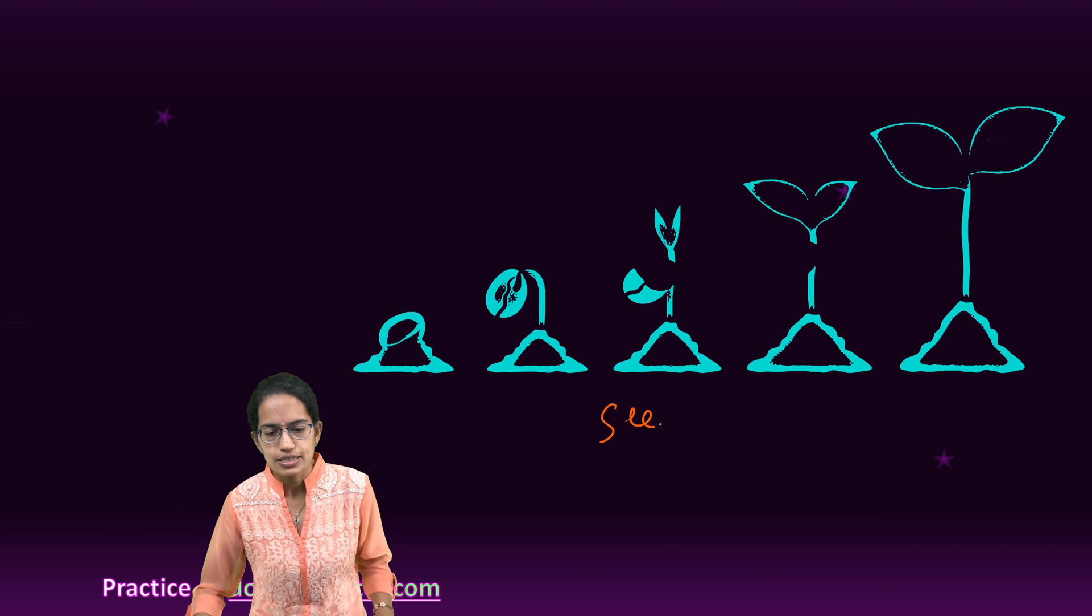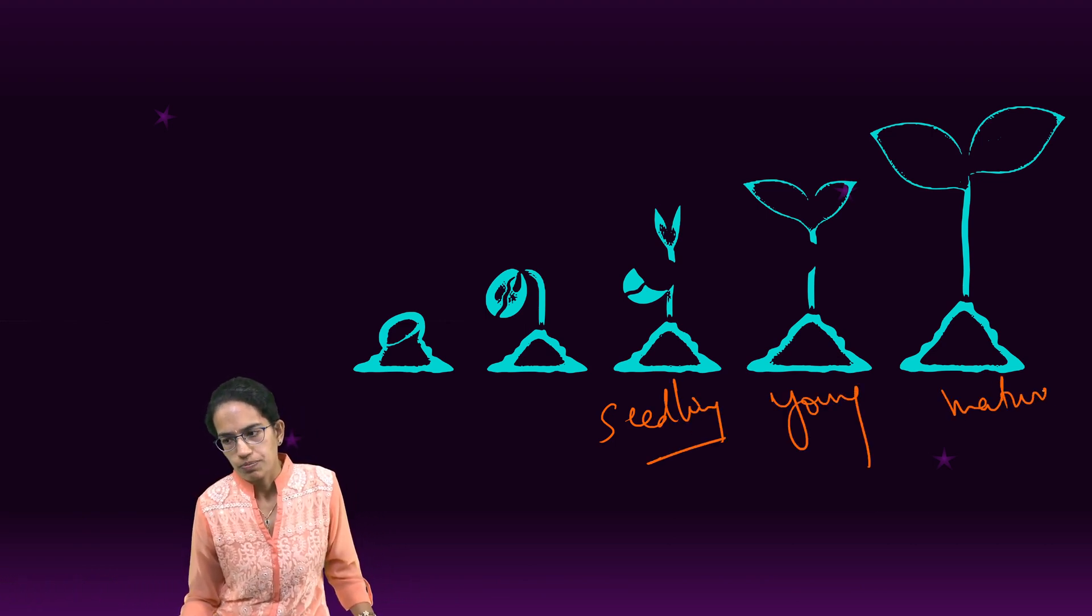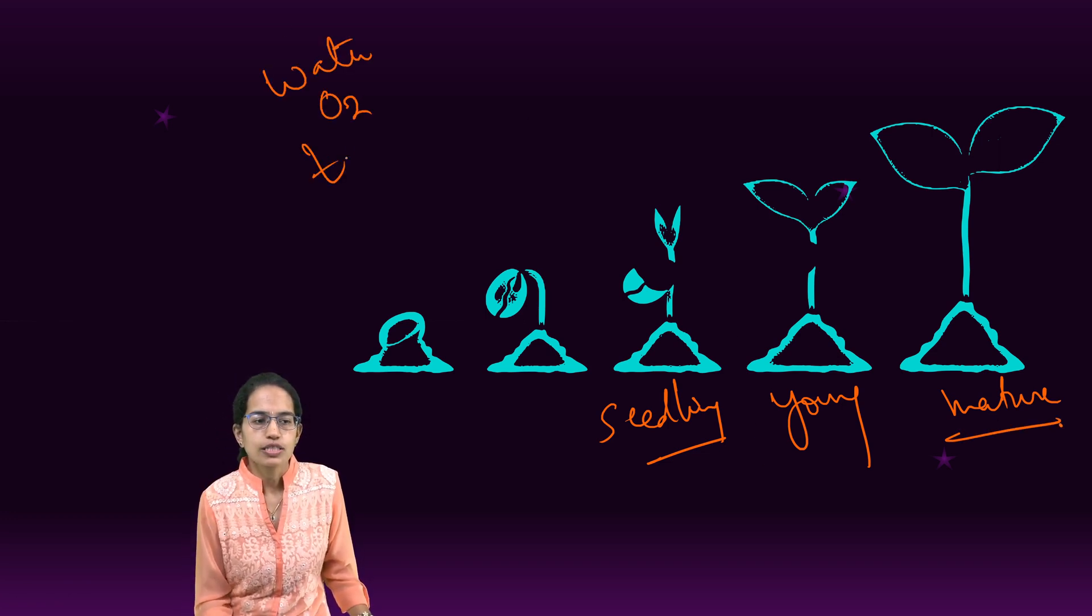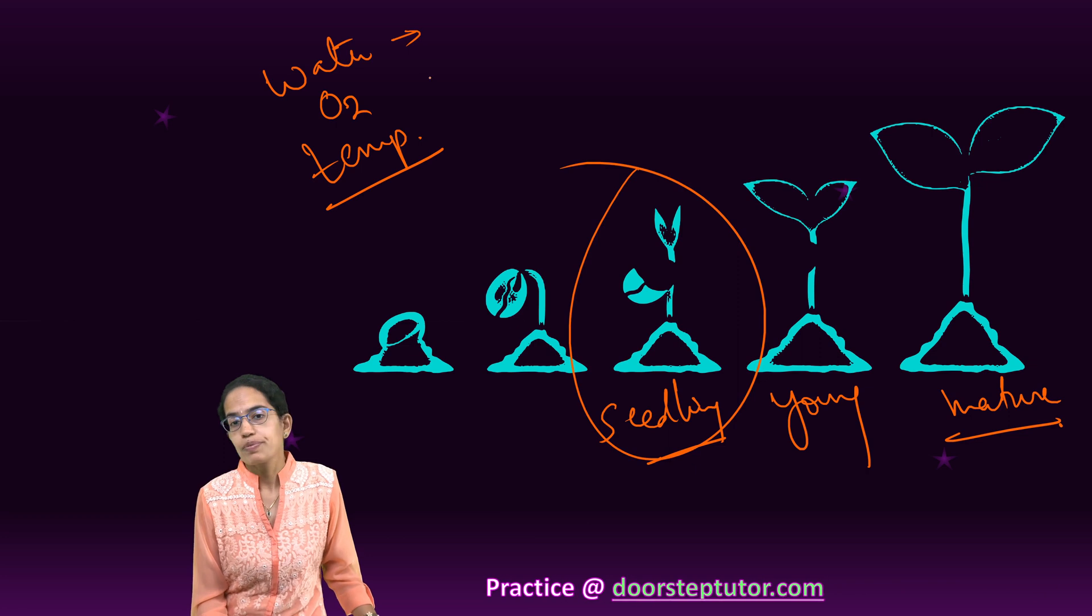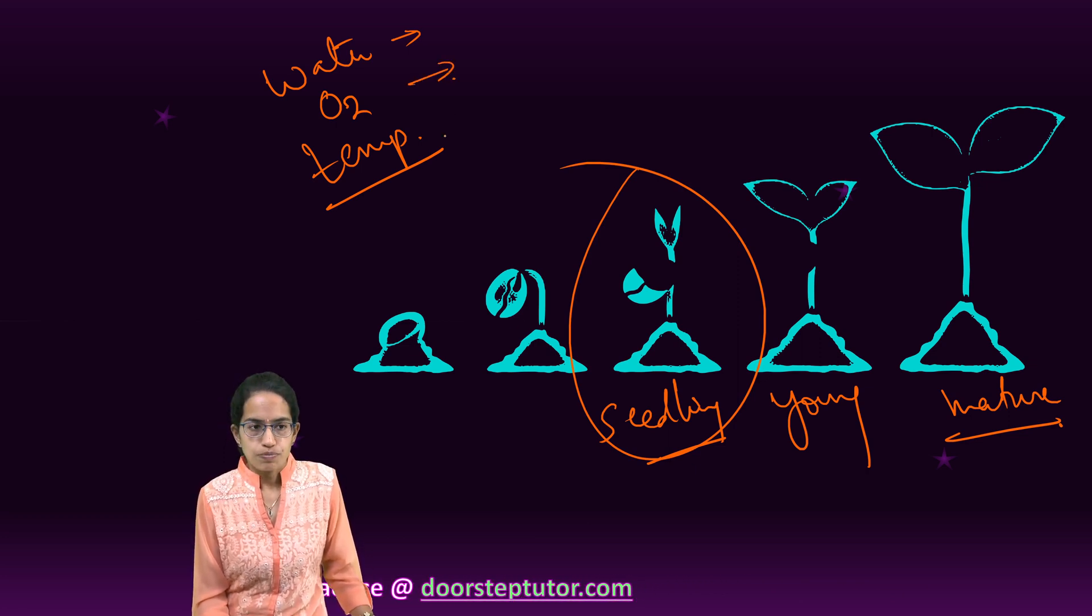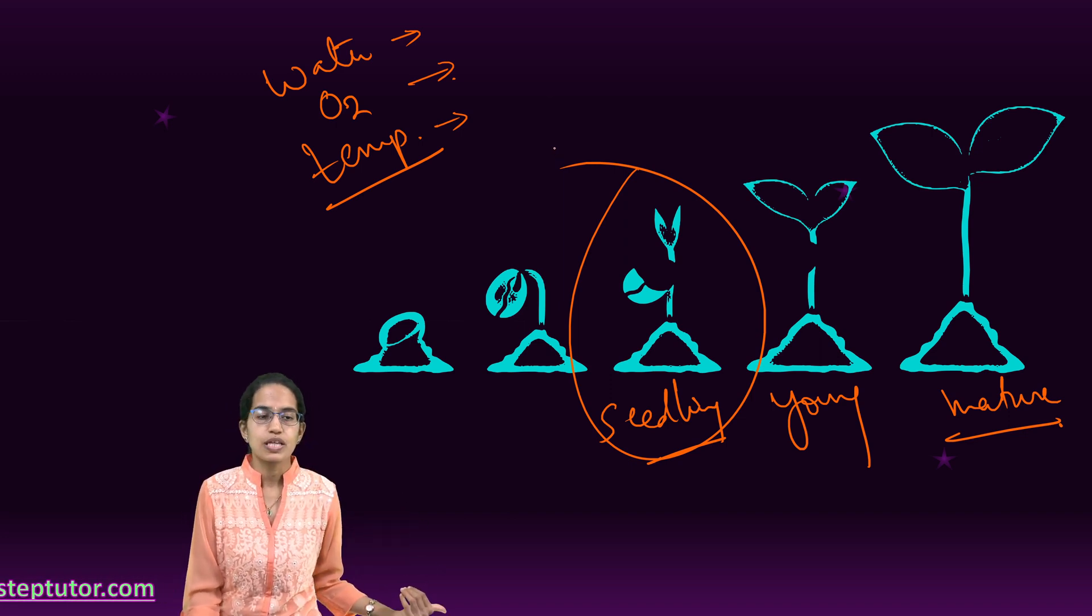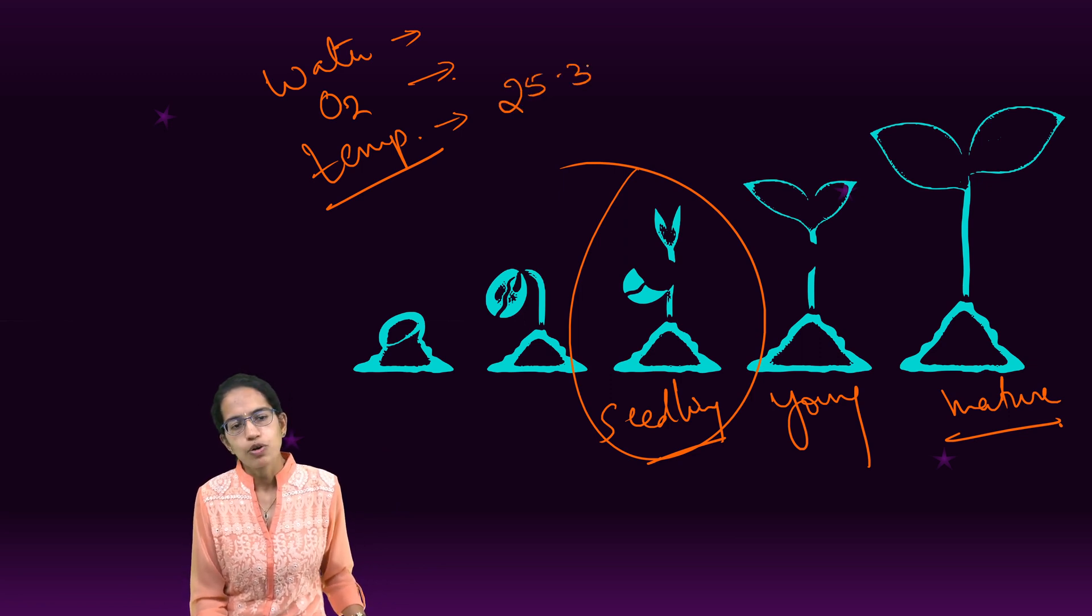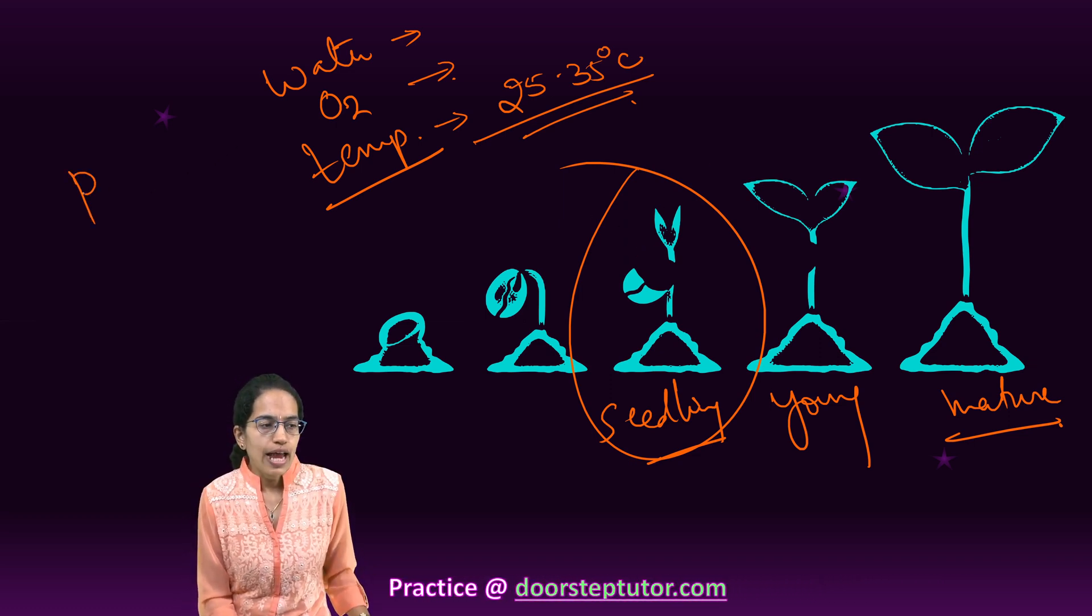The next is, from the seed, there is the seedling stage. From the seedling stage, young stage and finally, the mature stage of the plant takes place. Now, what are three important parameters? Water, oxygen and temperature, which are required for the germination for the process of seedling to complete. Water should be optimum, oxygen should be required and temperature should not be too less because it would inhibit the germination. If it is too high, it would destroy the process of germination. So, temperature should range somewhere from 25 to 35 degrees Celsius.